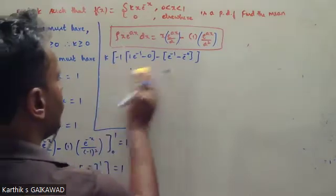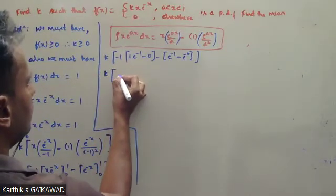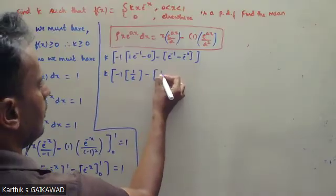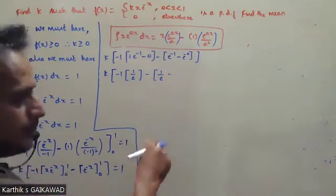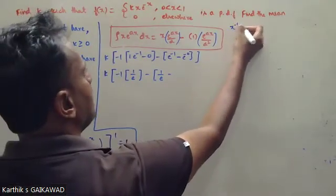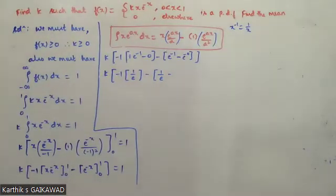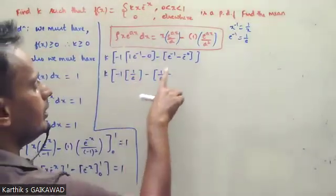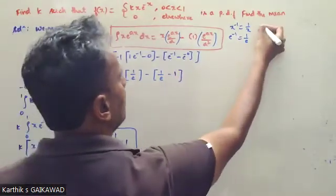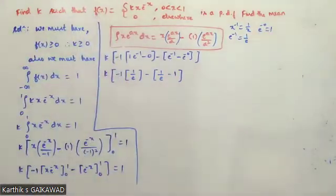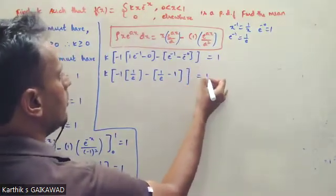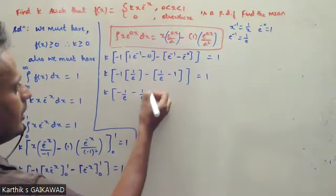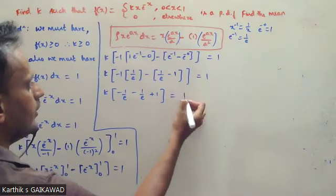So k times minus 1 by e, minus 1 by e, which is minus 2 by e, plus 1 equals 1. Simplifying: k times (minus 2/e + 1) equals 1. That is k times (minus 2 + e)/e equals 1, so k times (e minus 2)/e equals 1.